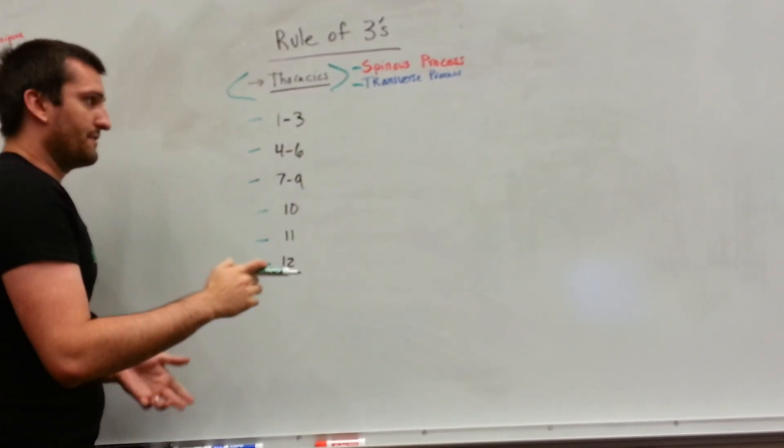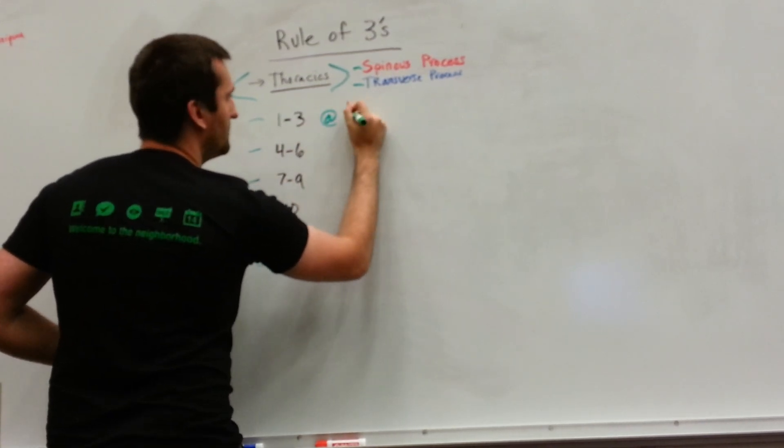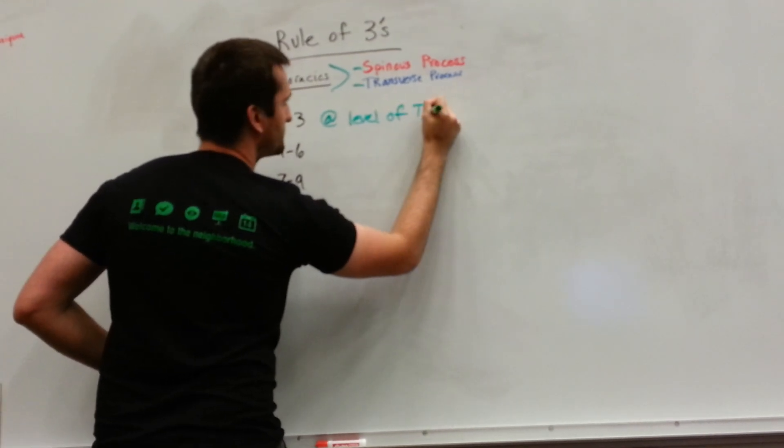Thoracic level one to three. If we're talking about T1, we're going to be at the level of the transverse process. So our spinous process is what we're going to be referring to.